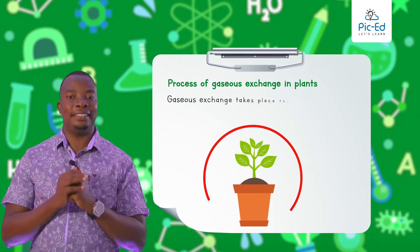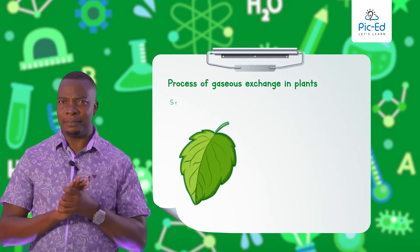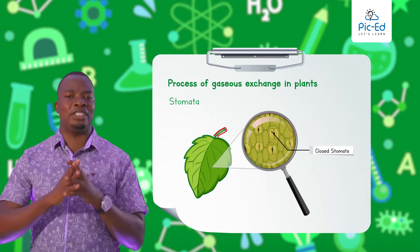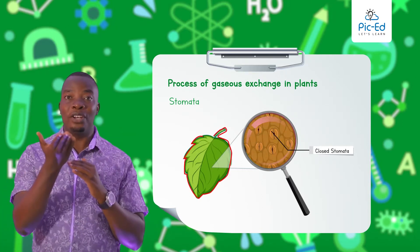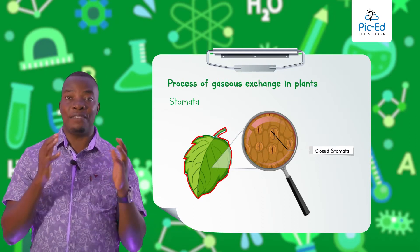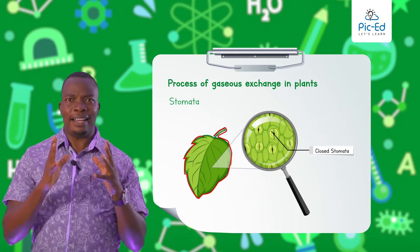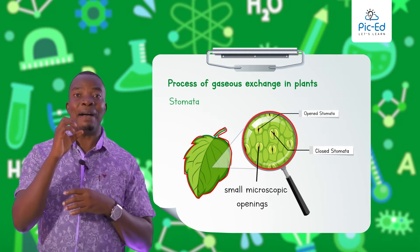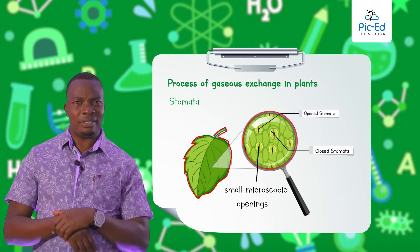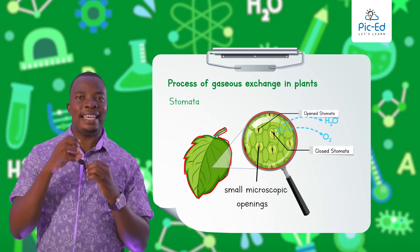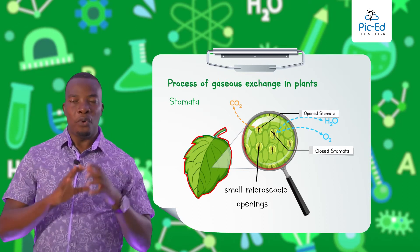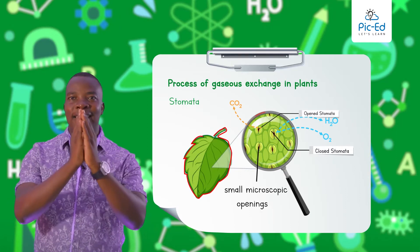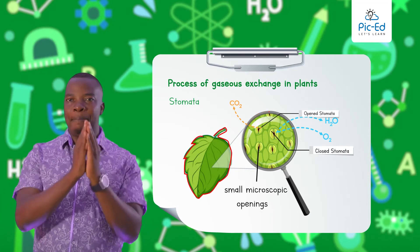Gaseous exchange in plants occurs majorly through the stomata. What is stomata? Stomata are found in almost all leaves, especially on the lower surface of the leaves for the terrestrial plants. These stomata are small microscopic openings that are guarded by the guard cells. These guard cells have thick inner walls and thin outer walls, which control the opening and closing of the stomata — in other words, they control the stomata aperture.